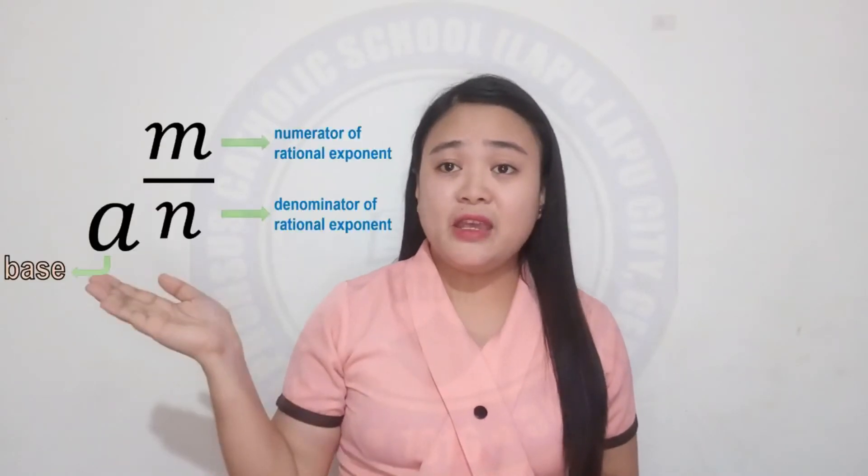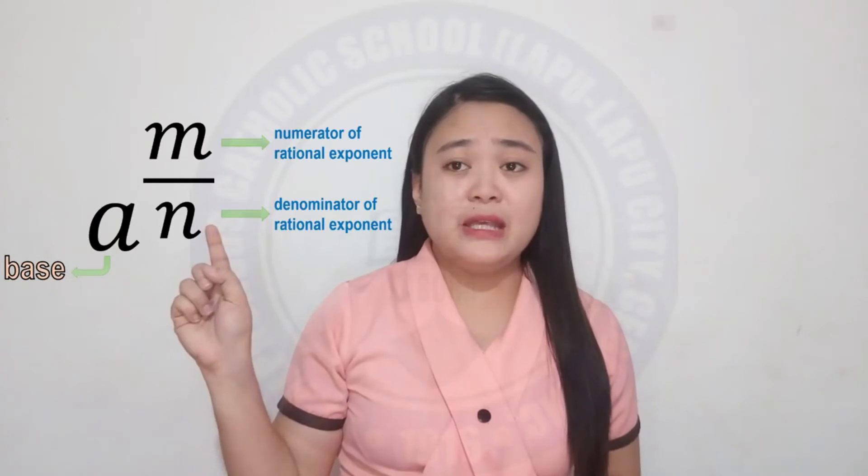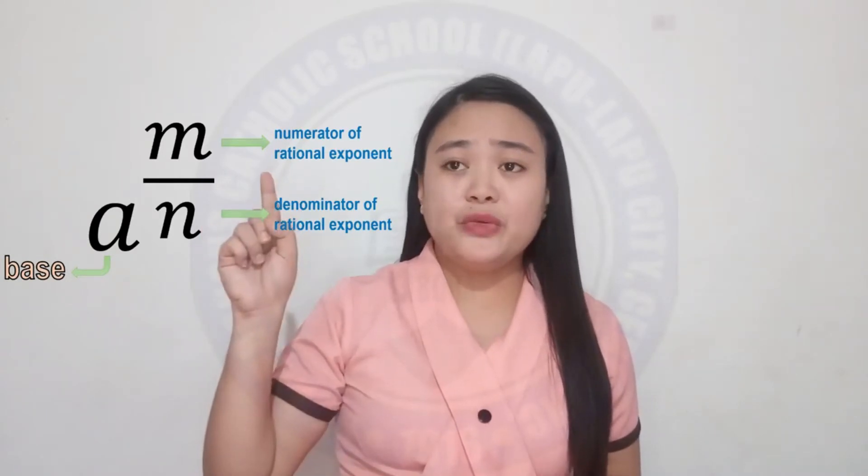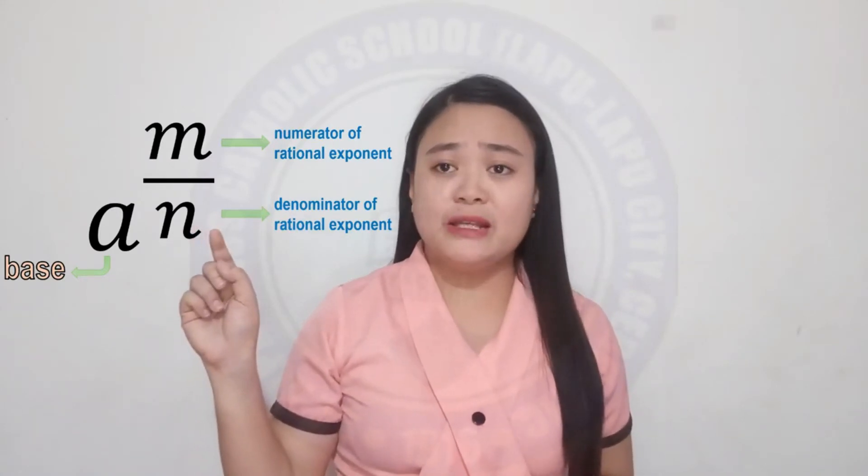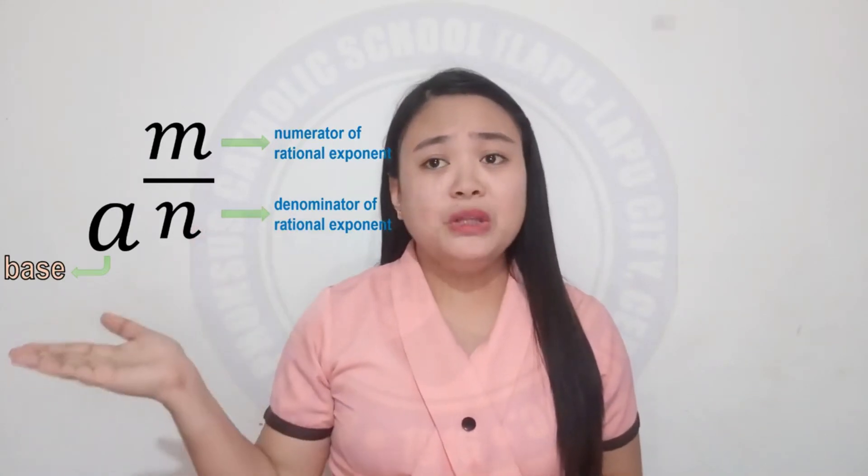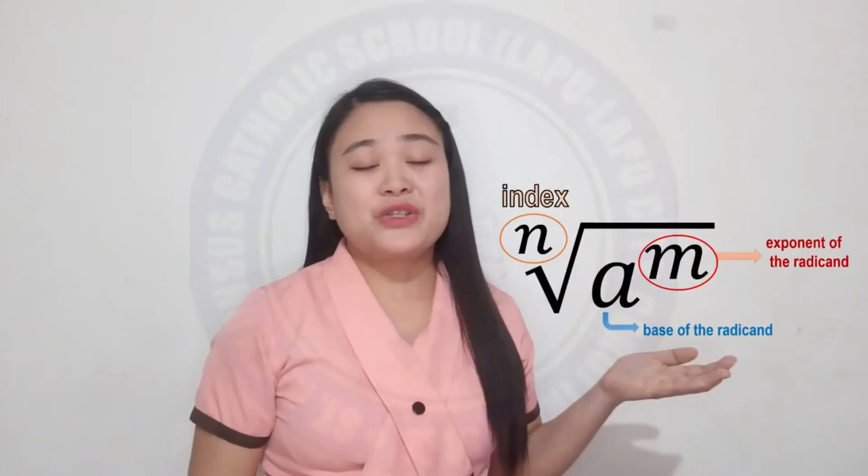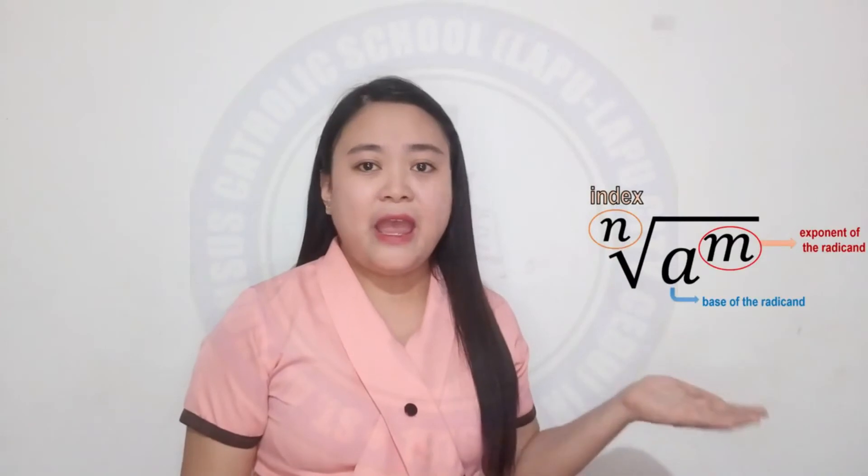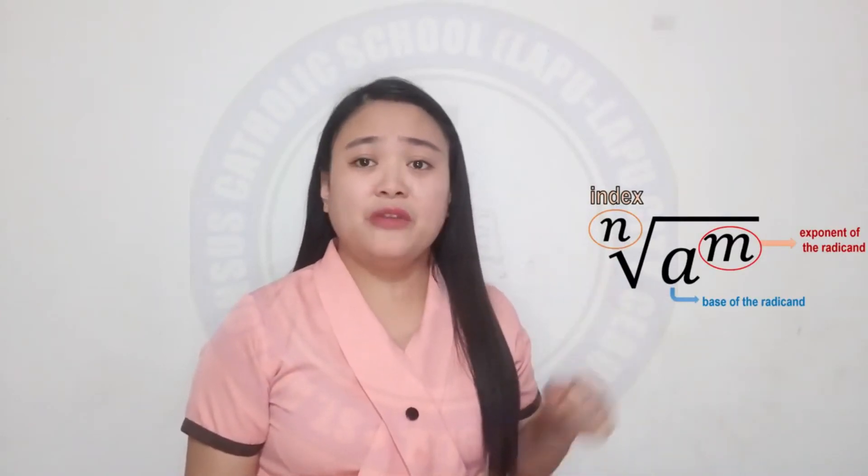Expressions with a rational exponent such as A raised to M over N: A is the base, M is the numerator of a rational expression, and N is the denominator. If we change this into a radical expression, it becomes N square root of A raised to M. N is the index, A is the base of the radical, and M is the exponent of the radical.